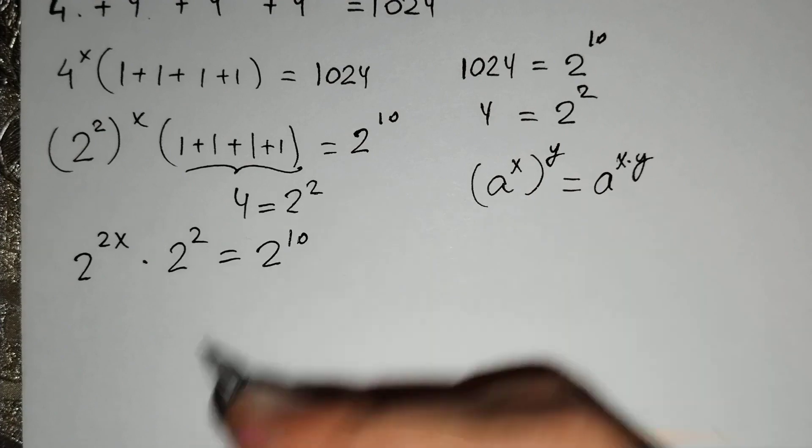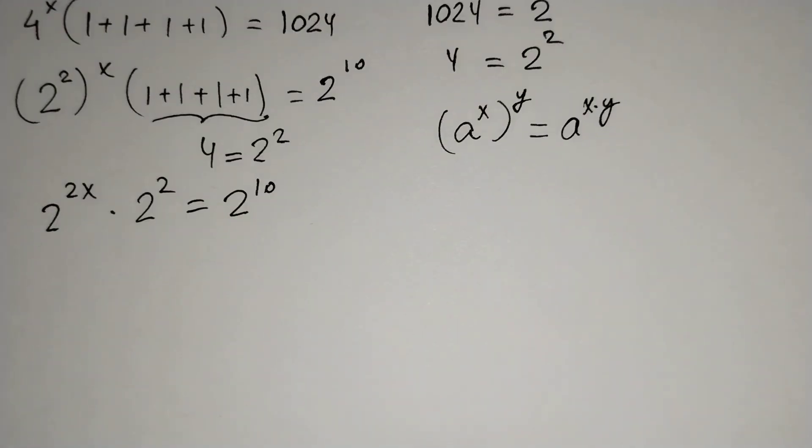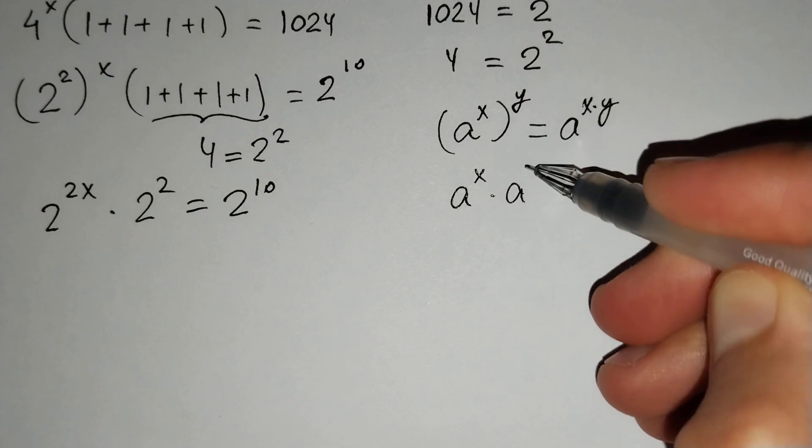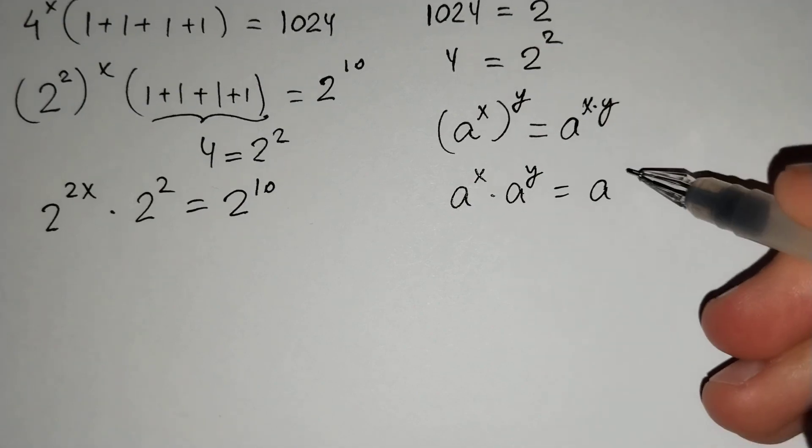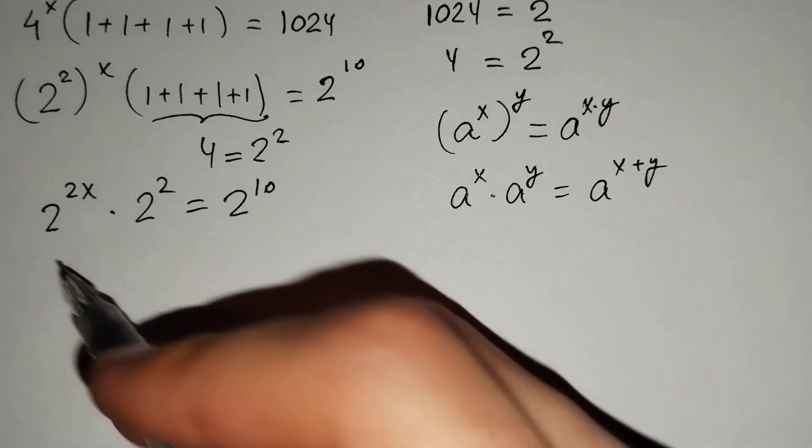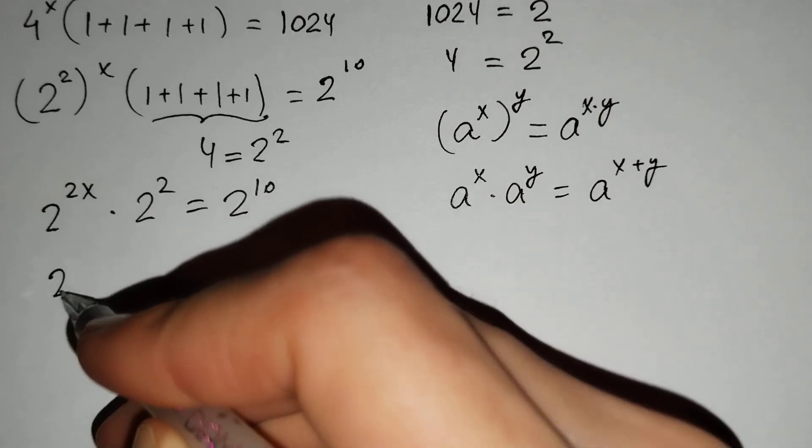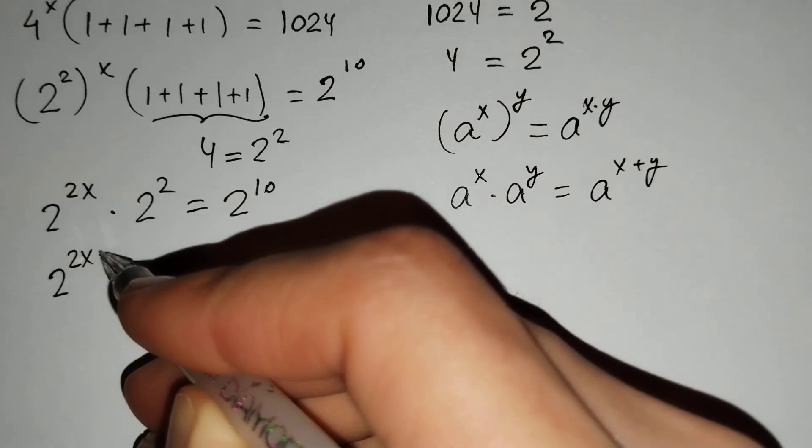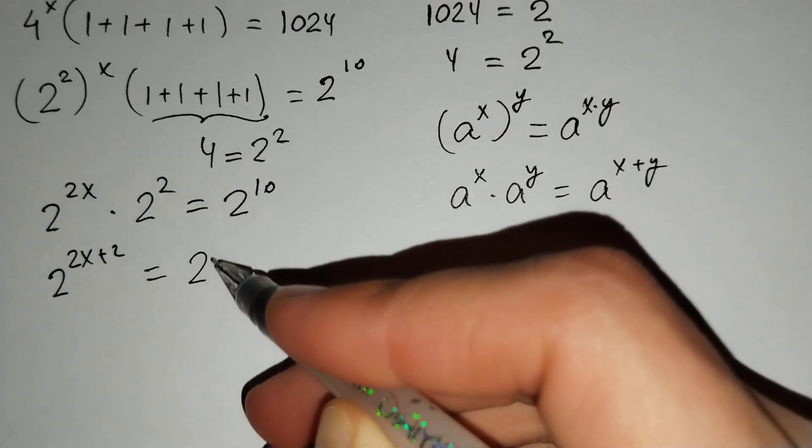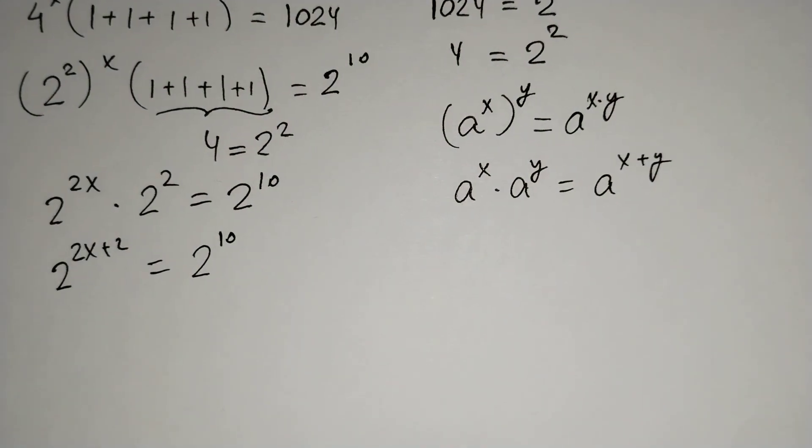Then, the rule a^x · a^y = a^(x+y). And here, 2^(2x+2) = 2^10. The bases are the same,